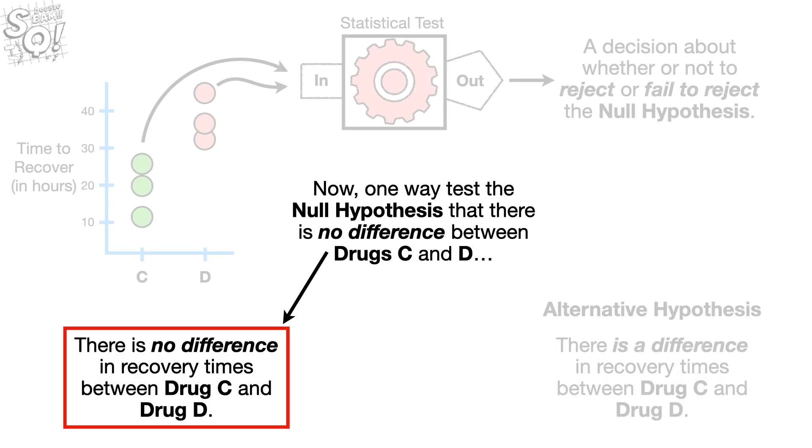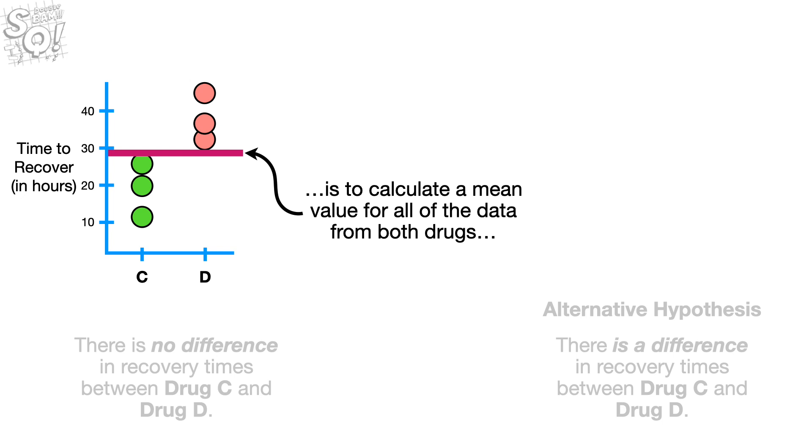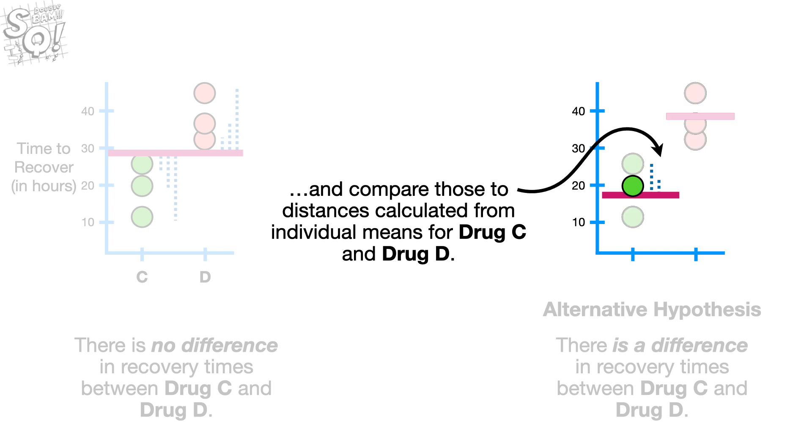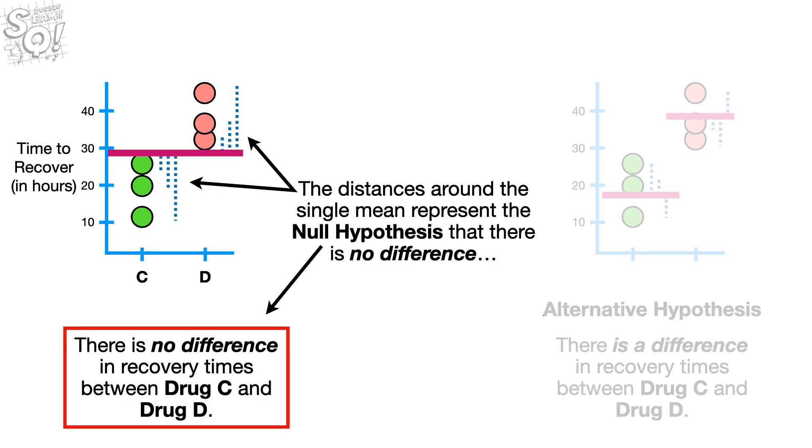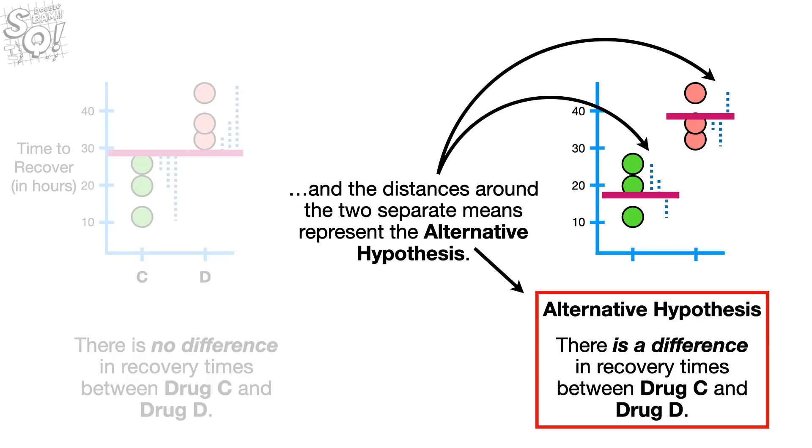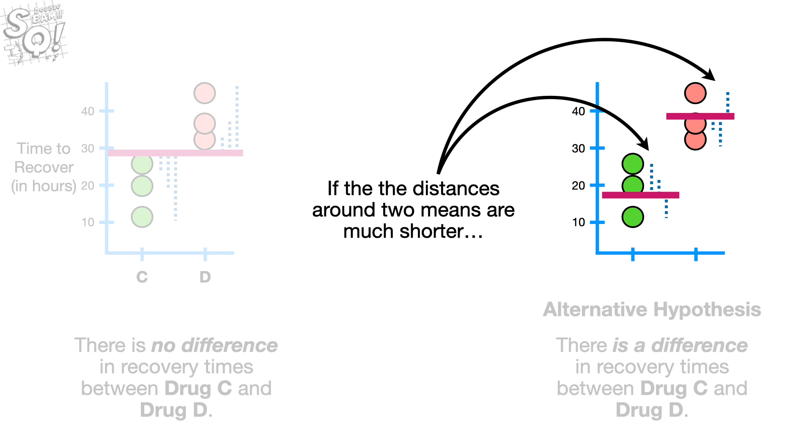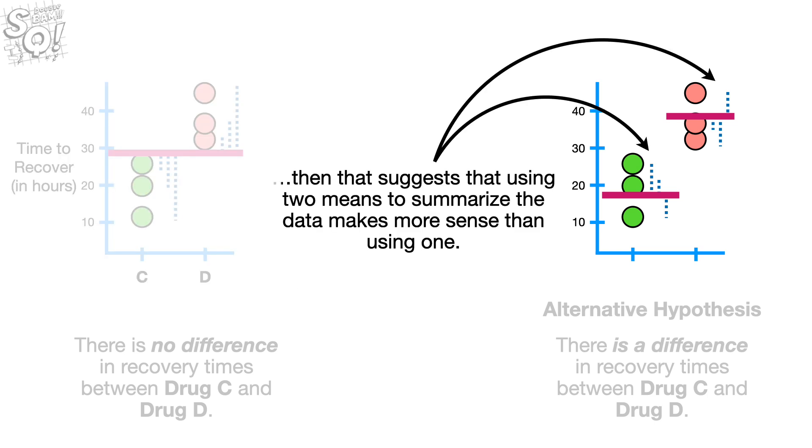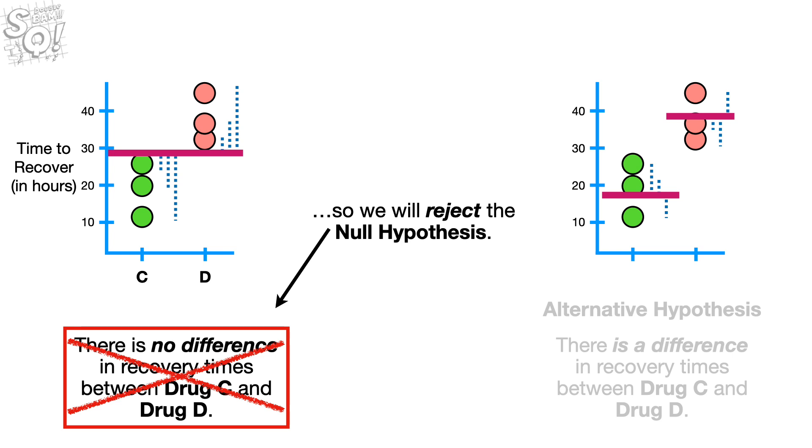Now, one way to test the Null Hypothesis that there is no difference between Drug C and D is to calculate a mean value for all the data from both drugs and calculate the distances between each observation and the mean, and compare those to distances calculated from individual means for Drug C and Drug D. The distances around the single mean represent the Null Hypothesis that there is no difference. And the distances around the two separate means represent the Alternative Hypothesis. If the distances around two means are much shorter than the distances around the single mean, then that suggests that using two means to summarize the data makes more sense than using one. So we reject the Null Hypothesis.